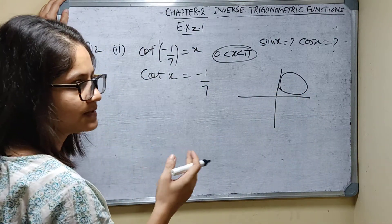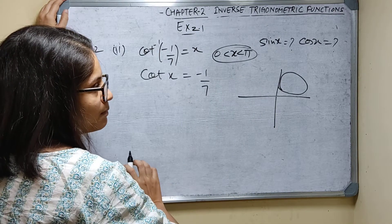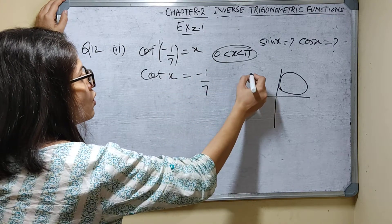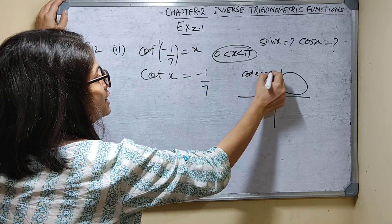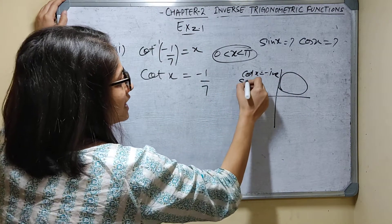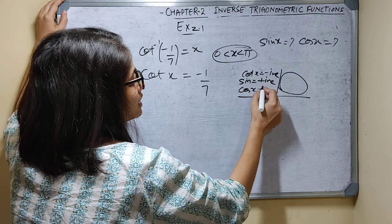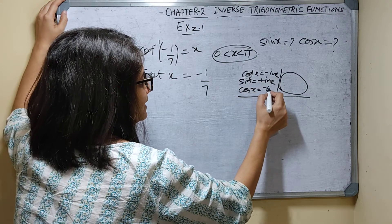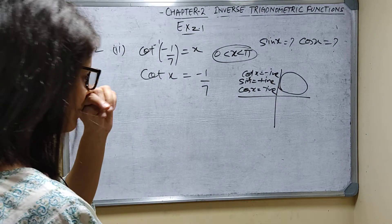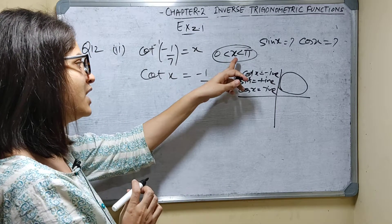In the second quadrant, sine is positive and cosine is negative. So since cot x equals minus 1 by 7 and x lies between 0 and pi, it cannot be in the first quadrant. It is definitely in the second quadrant, where cot is negative. So cos x is less than 0 and sin x is greater than 0.